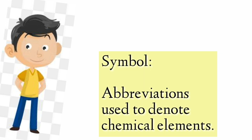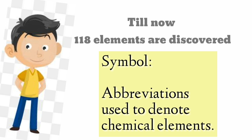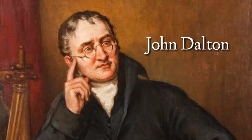From here we can define a symbol as nothing but an abbreviation used to denote chemical elements. A symbol is actually one atom of an element and the element itself. Still now we are having one hundred and eighteen elements on this earth.